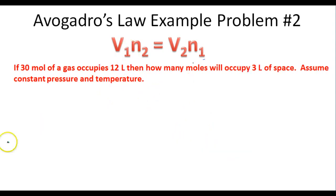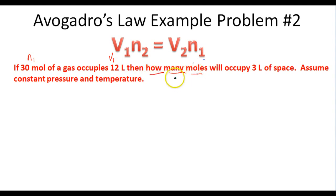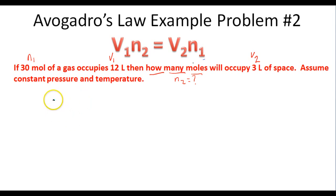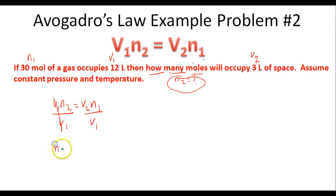In the second problem, if 30 moles of a gas occupies 12 liters, how many moles will occupy 3 liters of space? Assume constant pressure and temperature. Here, 30 moles is N1, 12 liters is V1, and 3 liters is V2. We're asked to find N2. Using Avogadro's Law and isolating N2, we get N2 equals V2 times N1 over V1. The volume units are both in liters, so we're good.